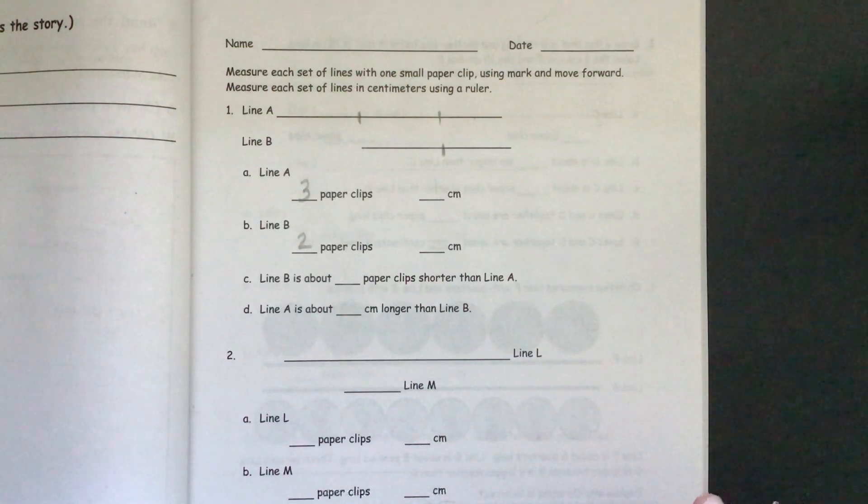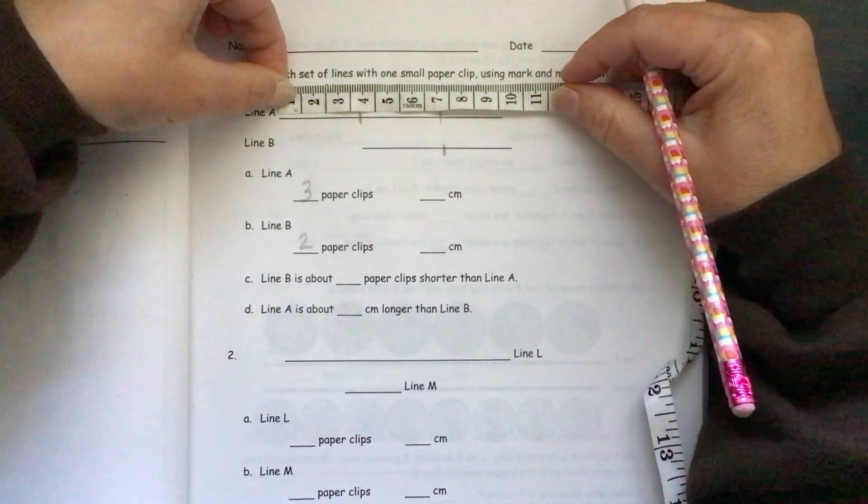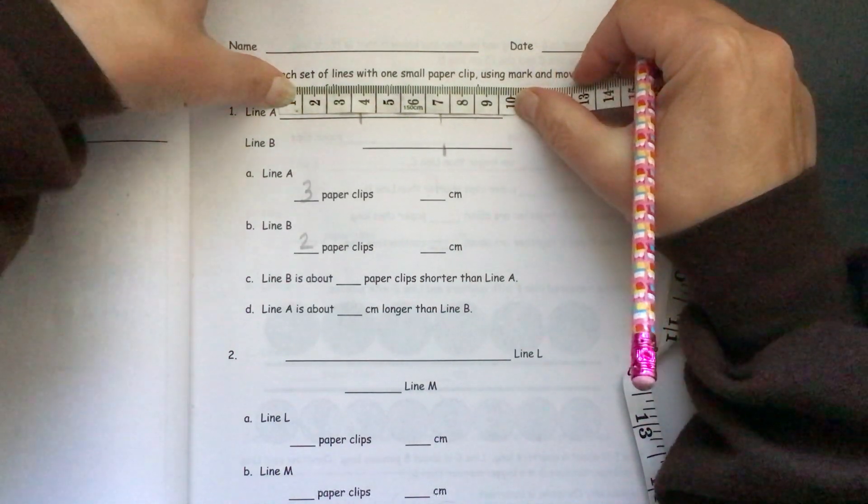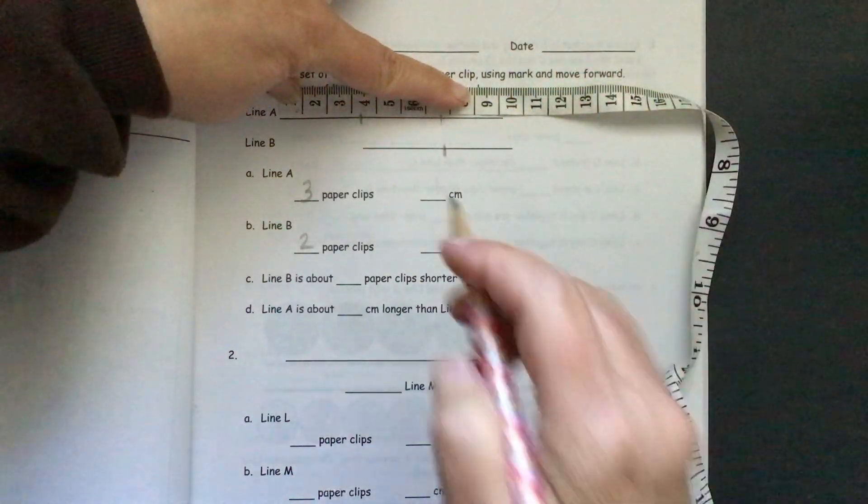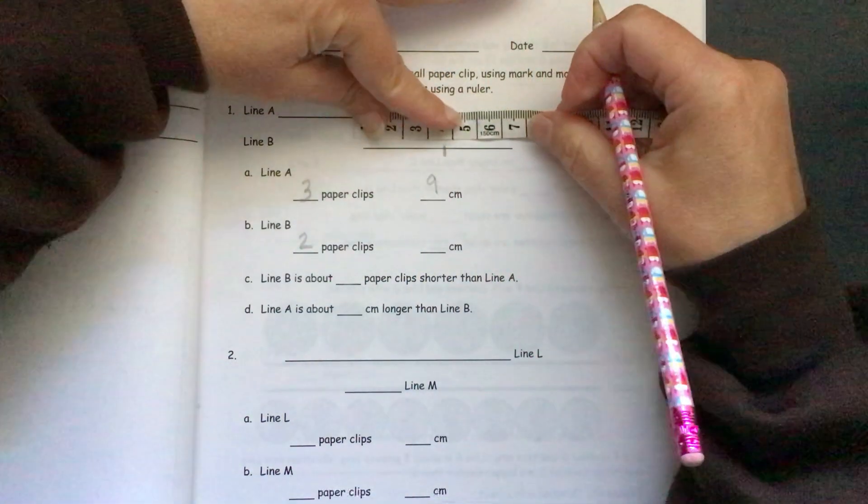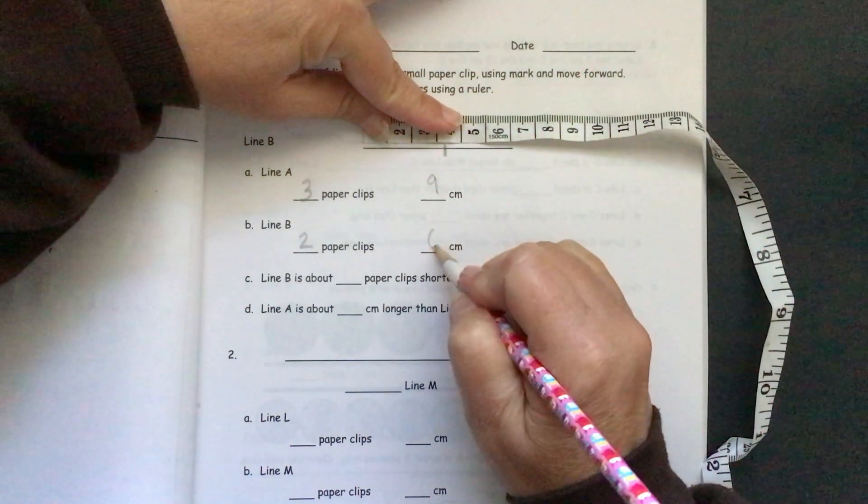Then I'm going to use my centimeter tape because it has very clear numbers. Make sure I line it up correctly. Line A is about nine centimeters long. And line B is about six centimeters long.